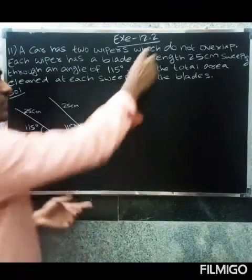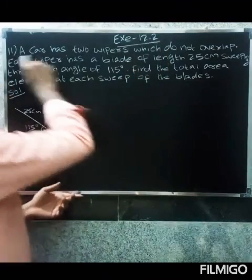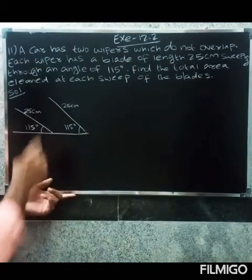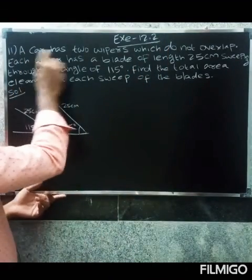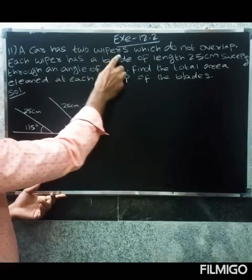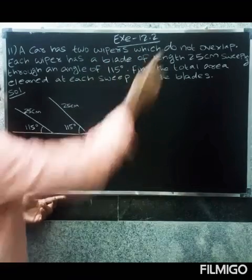So welcome friends. Now we have the question of Exercise 12. A car has two wipers which do not overlap.